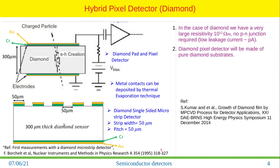In the case of diamond pixel detectors, you take the diamond and put multiple contacts on the top, and that can work as a pixel detector. You don't have to create any p-type doping here — that's the easiest thing about diamond.